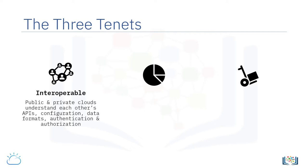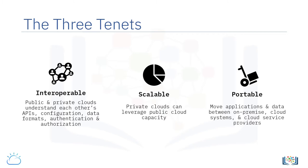When there is a spike in demand, a workload running on the private cloud can leverage the additional public cloud capacity, making it scalable. A hybrid cloud is also portable. Since you're no longer locked in with a specific vendor, you can move applications and data not just between on-premise and cloud systems, but also between cloud service providers.